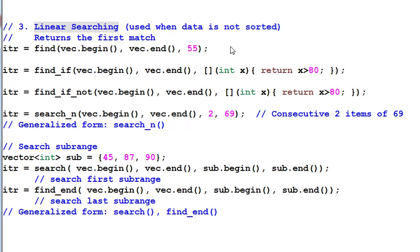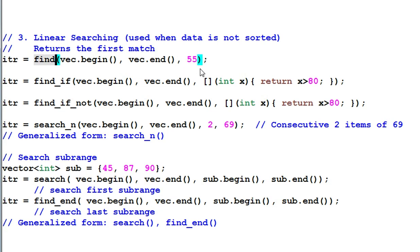Number three, linear searching. You should use linear search only when the data is not sorted. If the data is sorted, use binary search for faster searching. Linear search returns the first item that matches certain condition. So the find finds the first item that's equal to 55. Find if finds the first item that's bigger than 80. Find if not finds the first item that's not bigger than 80. Search n finds consecutive n items that match certain condition. In this case, it finds consecutive two items that's equal to 69. And search n has a generalized form with the same name.